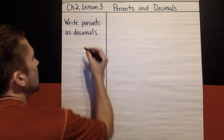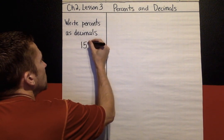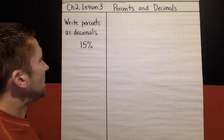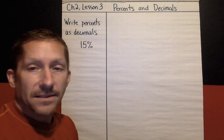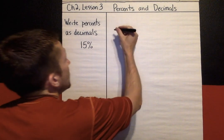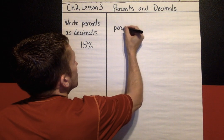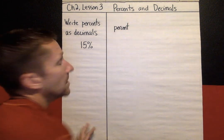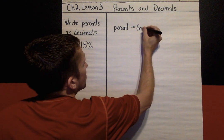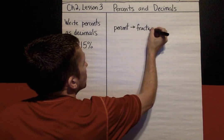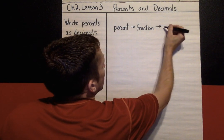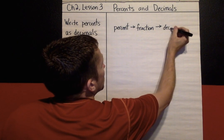The first example we're going to do is 15 percent. The strategy we're going to use — and again this ties to Lessons 1 and 2 — is we are going to start from a percent, change that into a fraction, and then change the fraction into a decimal.